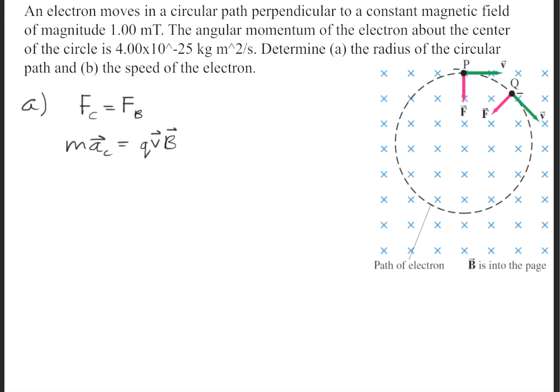That allows us to set the centripetal force equal to the magnetic force. If we expand on that, we get that the centripetal force is the mass times the centripetal acceleration, and the magnetic force is the charge times the velocity times the magnetic field.